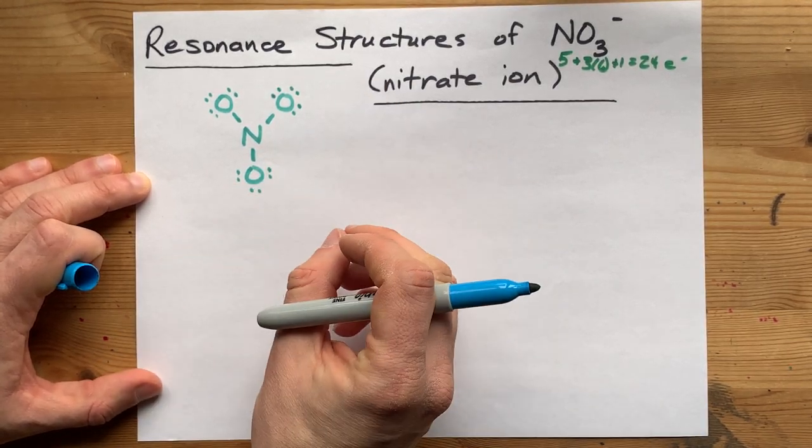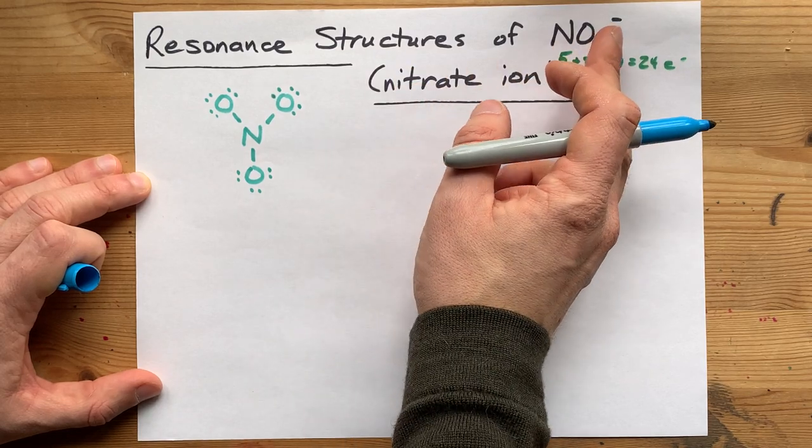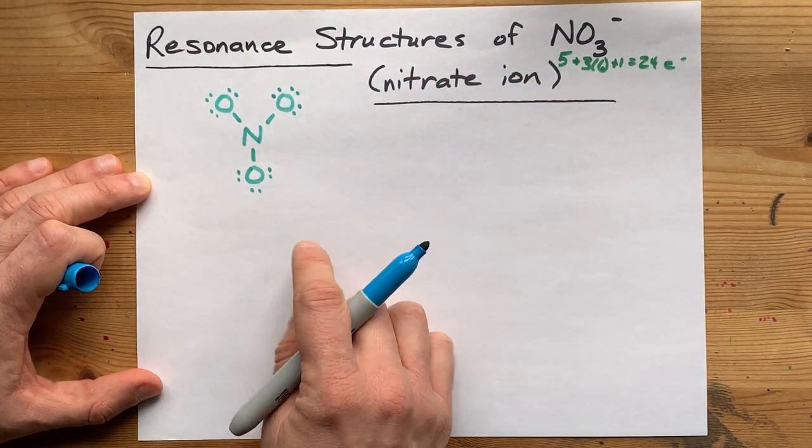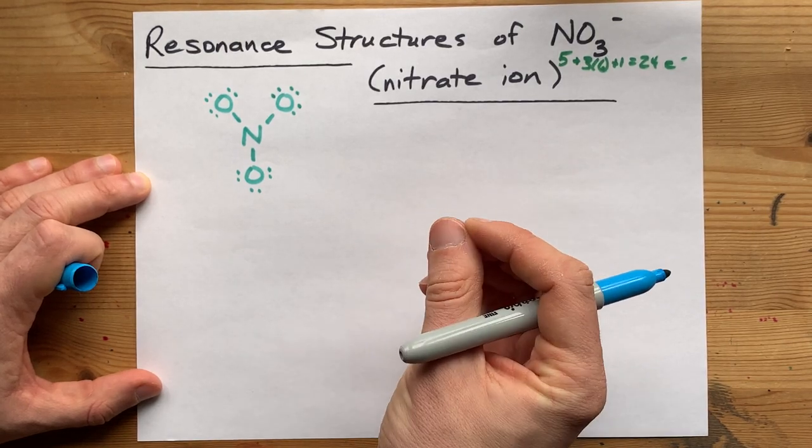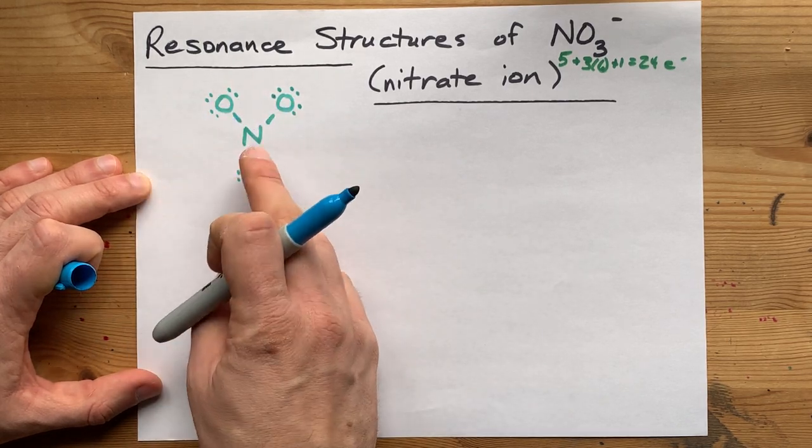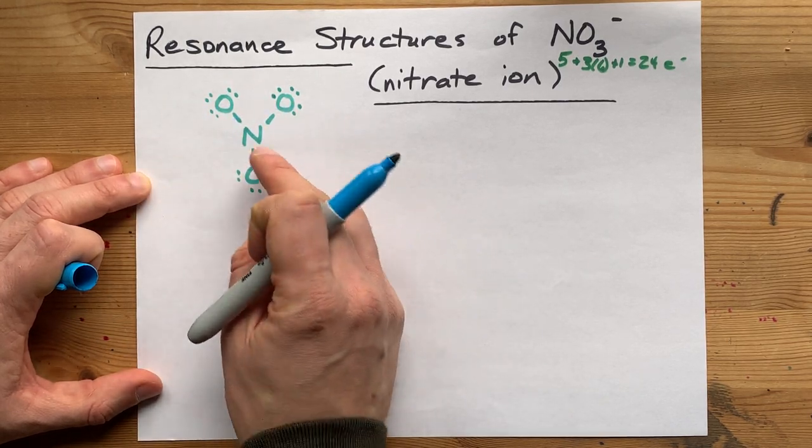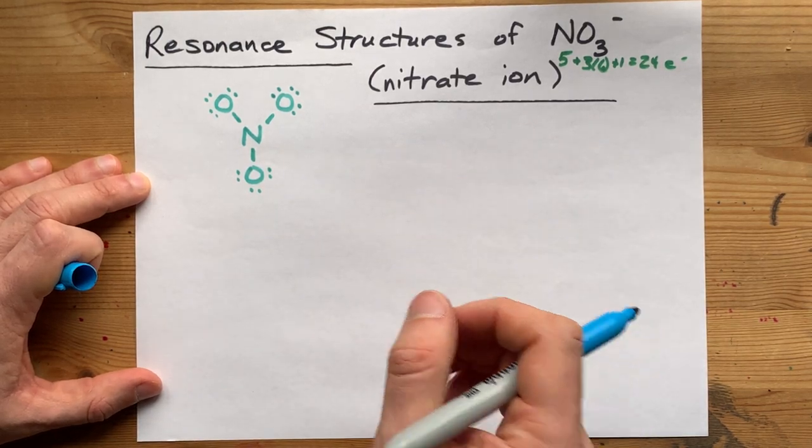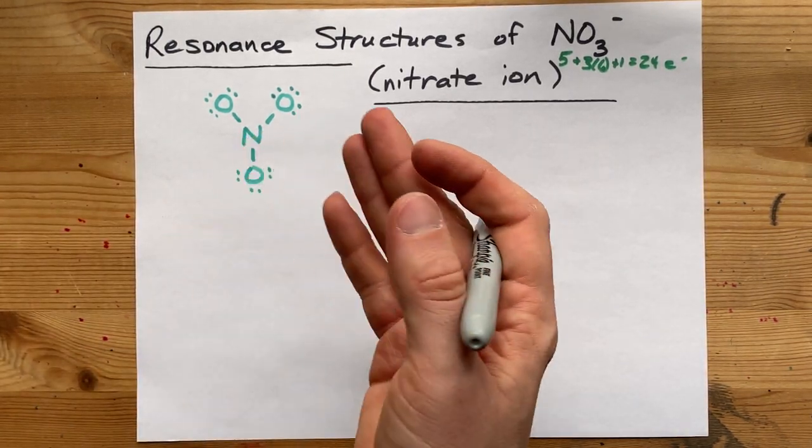The significance of the nitrate ion and the reason it has resonance structures is that nitrogen needs a complete octet. It needs 8 electrons in its outer shell, but currently it only has 6. So this is not stable because nitrogen is violating the octet rule.